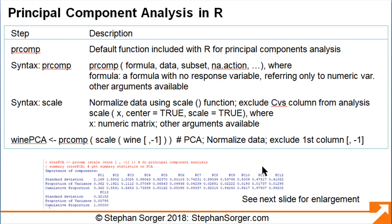We execute principal component analysis using the PCA function prcomp, included with R. We recommend normalizing the data to a common scale, so that the PCA process will not overweight variables which happen to have larger values. To normalize the data, we apply the scale function in R. We do not want to normalize the CVS variable, because we need to know if it is a 1, 2, or 3 to designate CV1, CV2, or CV3, respectively. The CVS variable is located in the first column, and we tell R not to include the first column by indicating a negative 1 in the brackets of the code.